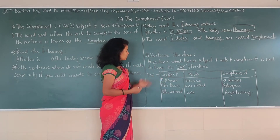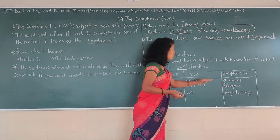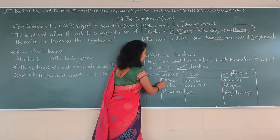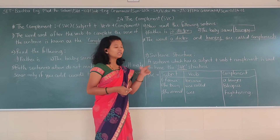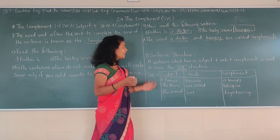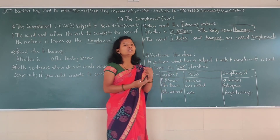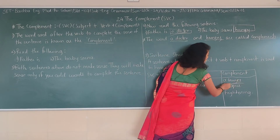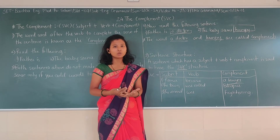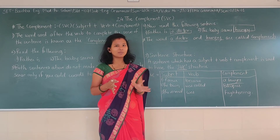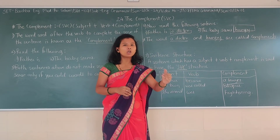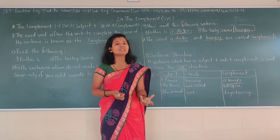In the first example: 'Rambo became a lawyer.' You can easily find out what is the subject — Rambo is the subject. 'Became' is the verb. And 'a lawyer' is completing the sentence — that is why it is the complement. If you say 'Rambo became' — but what did he become? It doesn't make sense. But by adding 'a lawyer,' 'Rambo became a lawyer' then makes sense.